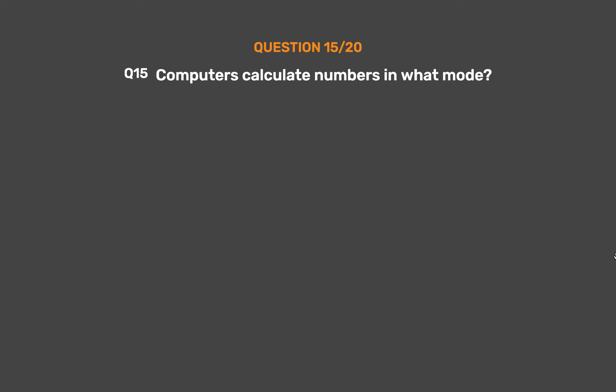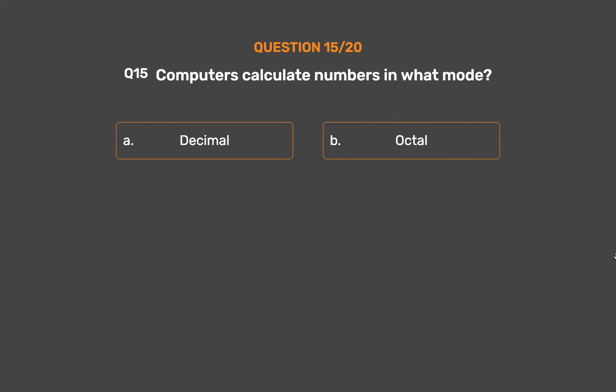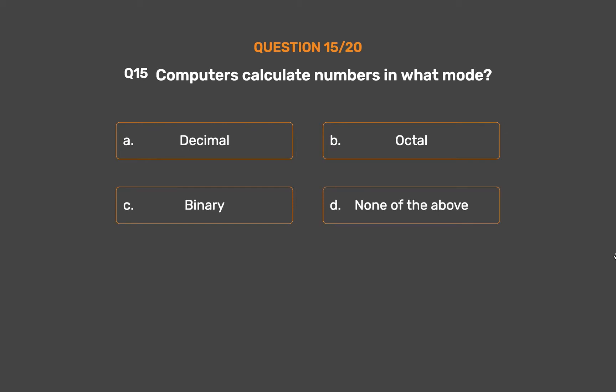Question number 15. Computers calculate numbers in what mode? Option A: Decimal. Option B: Octal. Option C: Binary. Option D: None of the above.